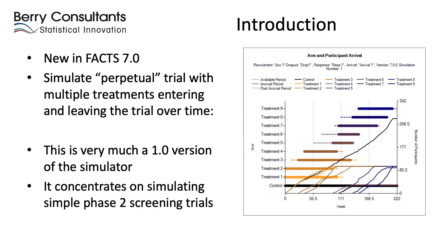New in FACTS 7.0 is a whole new simulation engine that can simulate these perpetual platform trials with multiple treatments — some starting at the beginning and finishing, and other treatments coming in and leaving over time. Here you can see an example graph with time on the x-axis and different bars representing different treatments. We've started with treatments one and two, treatment three comes in, treatment two and four end, treatment five starts, and the control arm recruits throughout the whole time. The graph also shows cumulative patient recruitment into the different treatment arms.